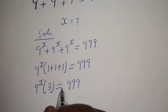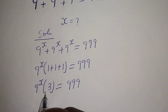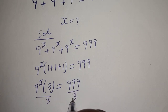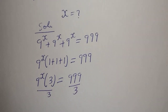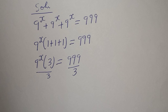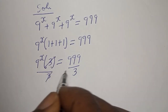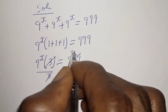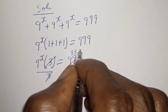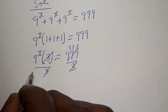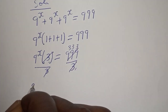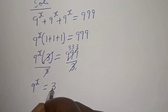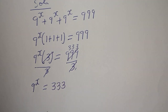Now let's divide both sides by 3. The 3 on the left cancels, and we have 9 raised to power s is equal to 333.